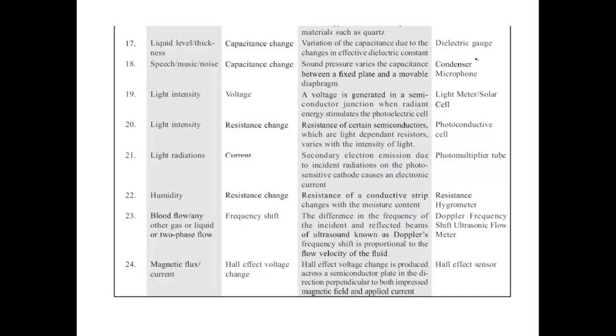Other examples include condenser microphones, where sound is measured as capacitance change, and Hall effect sensors, where magnetic flux or current is measured as Hall effect voltage change. We will study some of these in detail in coming lectures. Coming back to functional elements, we have already seen the primary sensing element, variable conversion element, and variable manipulation element.